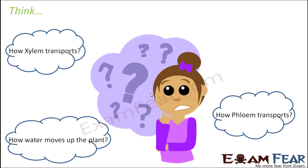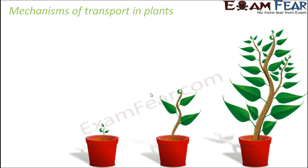So how is xylem able to transport in the upward direction against gravity? Similarly, how does phloem transport? How does this movement of substances happen from one part of the plant to another? The answer lies in the various mechanisms of transport in plants. It is not just one way — there are various mechanisms.